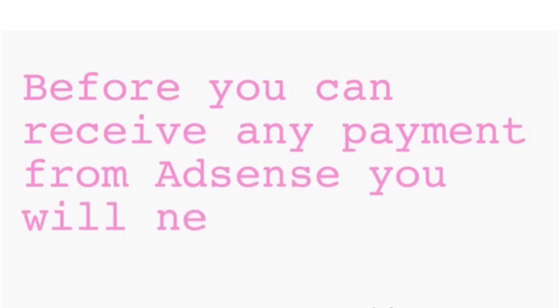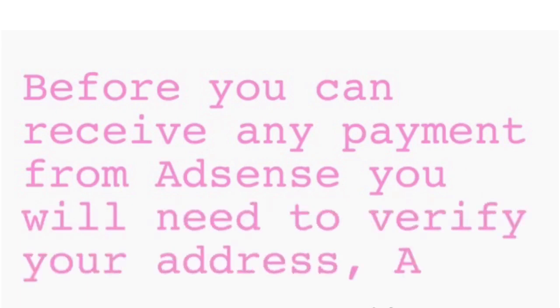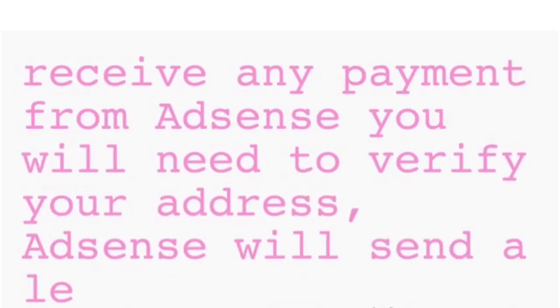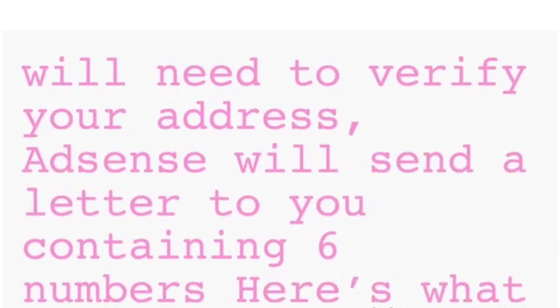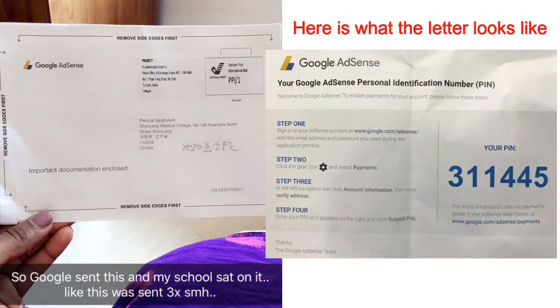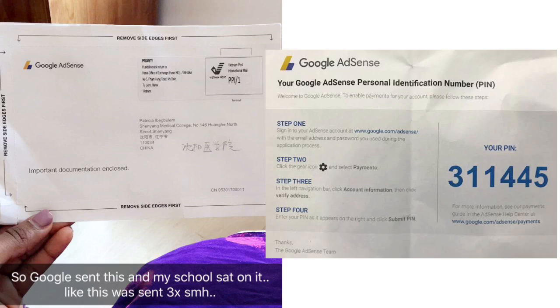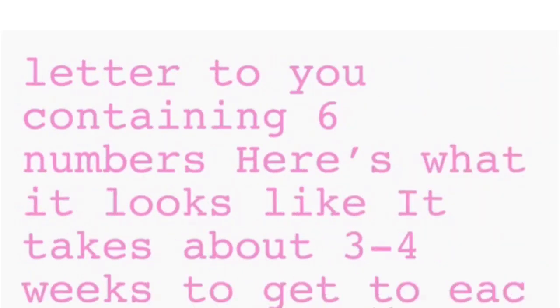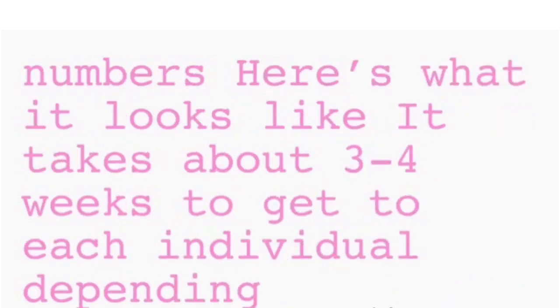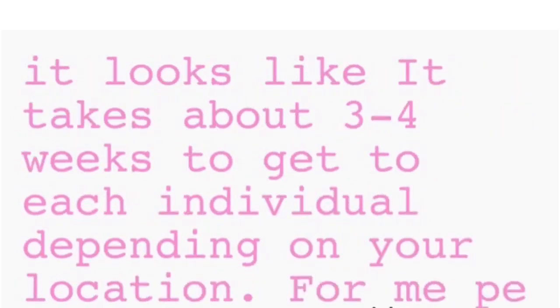How do I verify my address? Before you can receive any payment from AdSense, you need to verify your address. AdSense will send you a letter containing six numbers — the next slide shows what it looks like. Here is what the letter looks like. You can see me ranting on Snapchat — this wasn't my PIN, but this was exactly how mine was. It takes about three to four weeks to arrive, depending on your location.